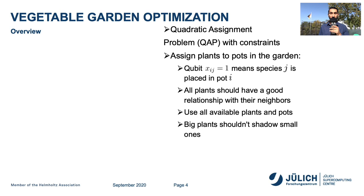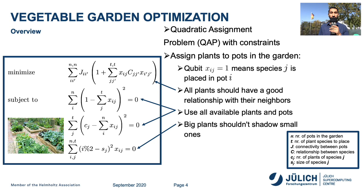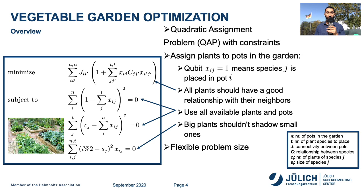Mathematically, this problem is written such that we wish to minimize the function on top, subject to three constraints at the bottom, where n is the number of pots in the garden, t the number of plant species to place, j the connectivity between pots, c the relationship between species, cj the number of plants of species, and sj the size of species j. This problem has the benefit that we can have a flexible problem size, depending on how many plants and pots we choose to optimize.